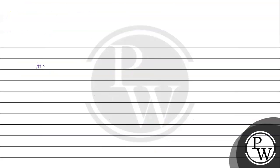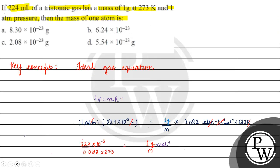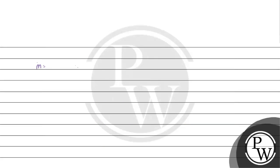Now we have m's value. m will equal 0.082×273 divided by 224×10⁻³, giving us 99.9375 g per mole.